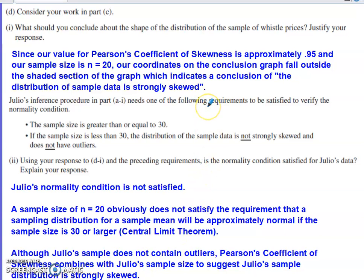The last part of this says, okay, refer back to what you did in part C. What should you conclude about the shape of the distribution of whistle prices in the sample? Justify your response. Well, we just kind of said this. Our coordinates on that graph lied outside of the shaded section. Because of that, we would have the conclusion that we have a distribution of sample data that is strongly skewed.